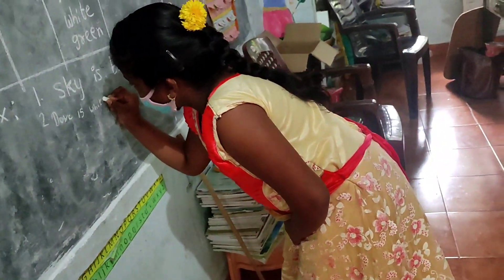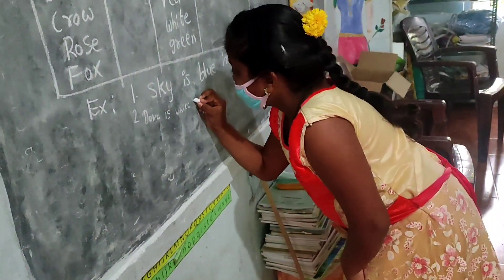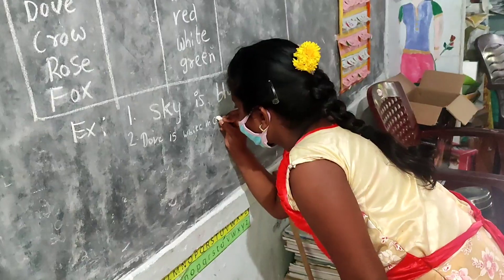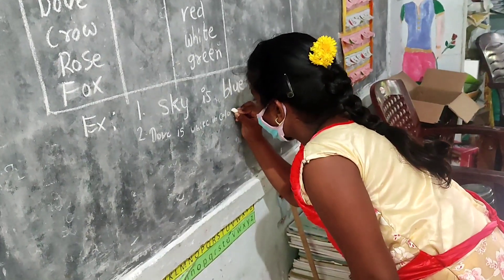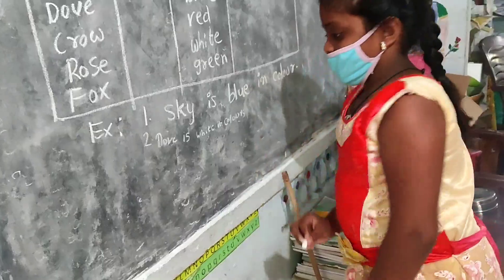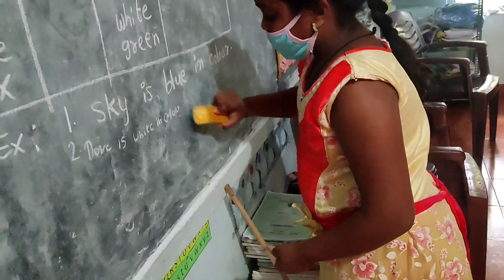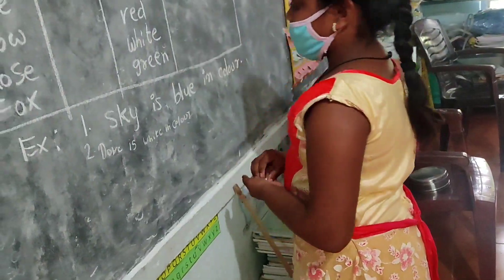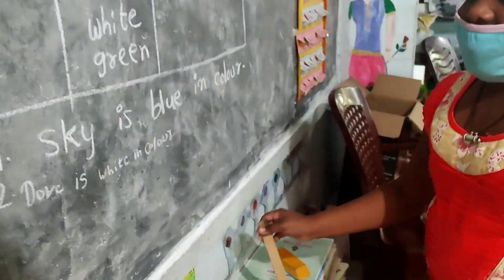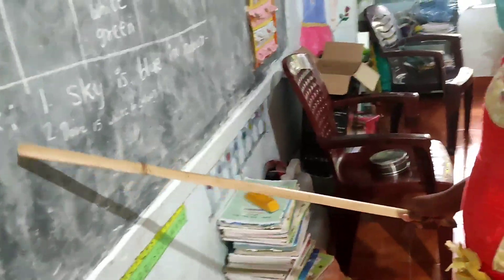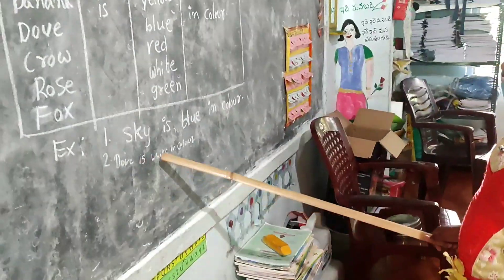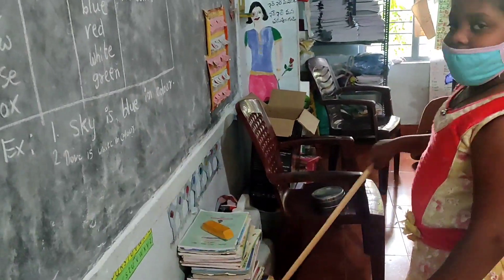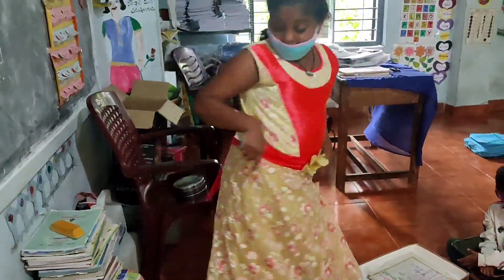Alif, come and look at the blackboard. Read. Now read the sentence. Down is white in colour. Very good. Go to your place. Next.